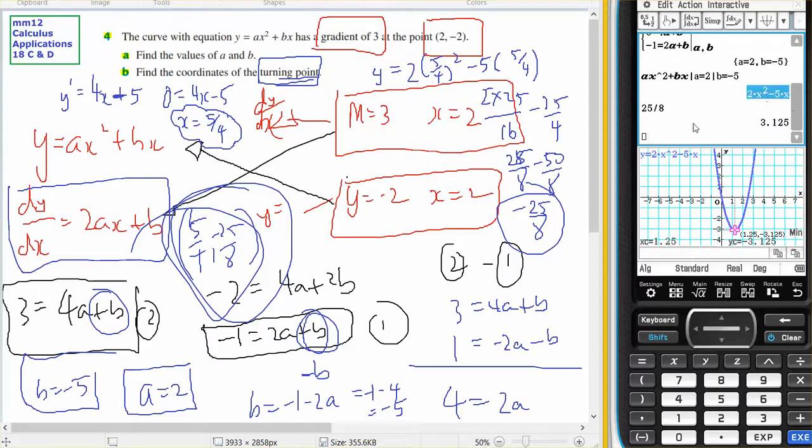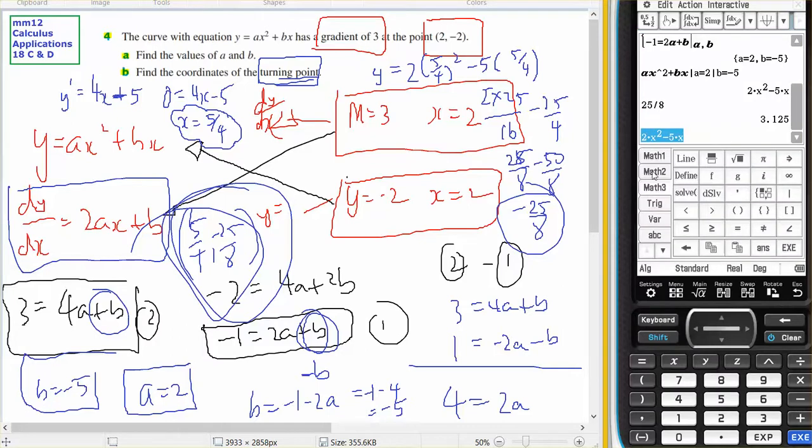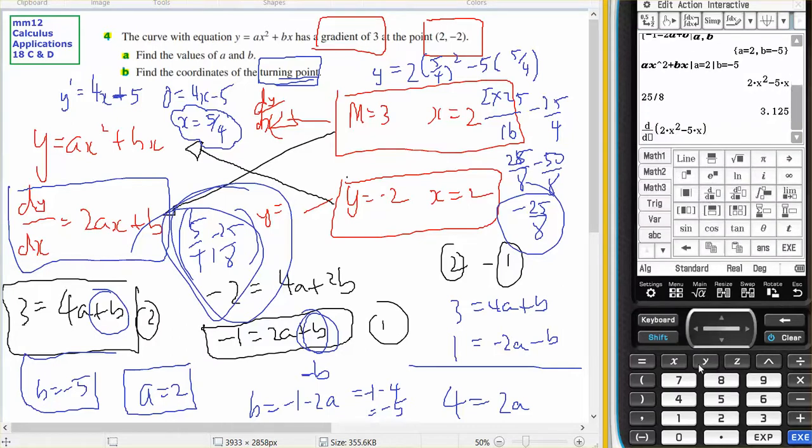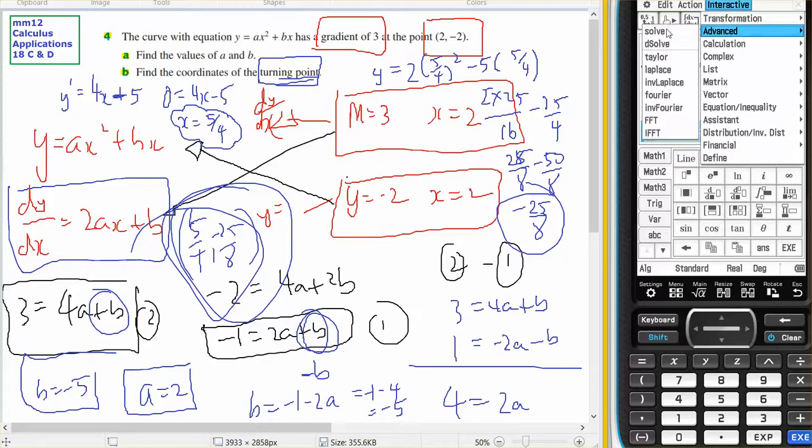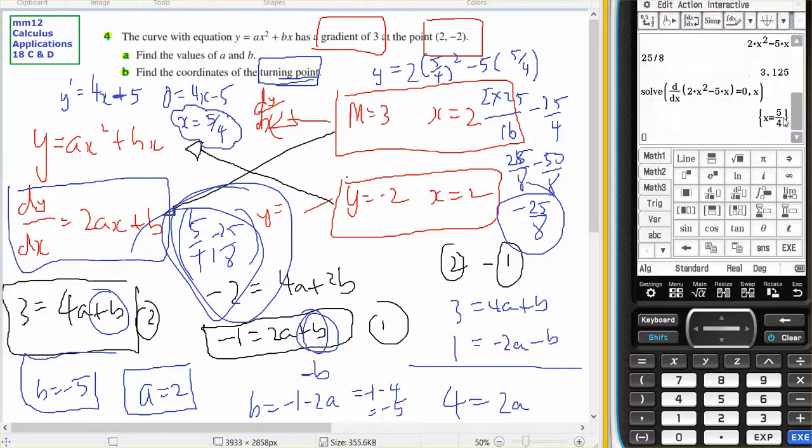How would I do that in main? I would take the derivative with respect to x, set it equal to 0, and solve for x, and there's my 5 on 4.